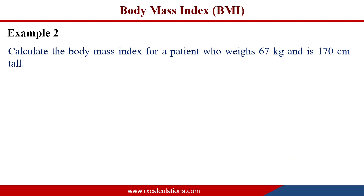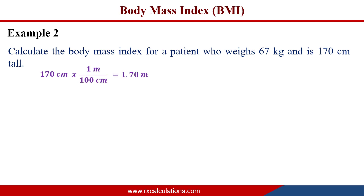Example 2: Calculate the body mass index for a patient who weighs 67 kilograms and is 170 centimeters tall. The weight is in kilograms but the height is in centimeters, so we first convert: 170 cm × (1 m / 100 cm) = 1.70 meters. Now we can use the metric BMI equation.